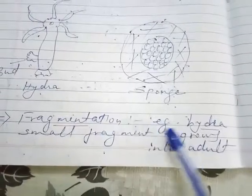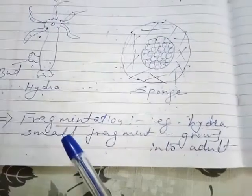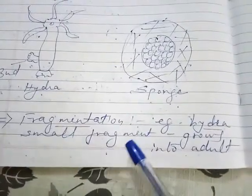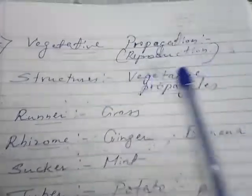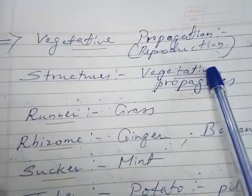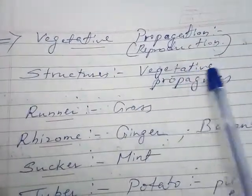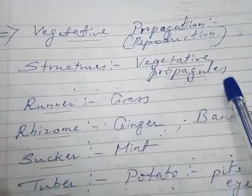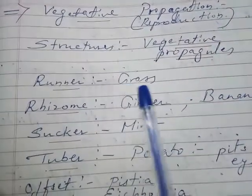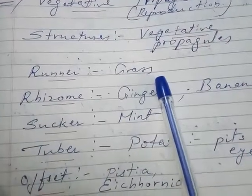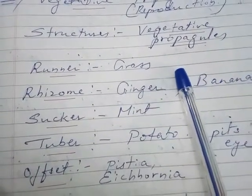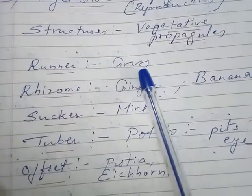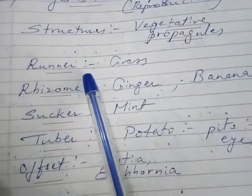Fragmentation is also seen in Hydra. If it is divided into small fragments, each fragment can grow into an adult. Vegetative propagation or vegetative reproduction — the structures used are called vegetative propagules. For example, a runner in the case of grass — the branches run along the soil, go inside, give out roots, and new grass develops.